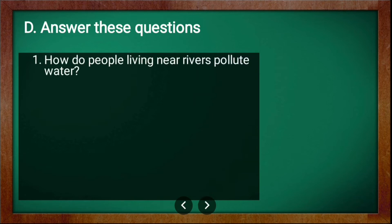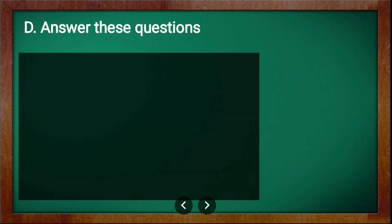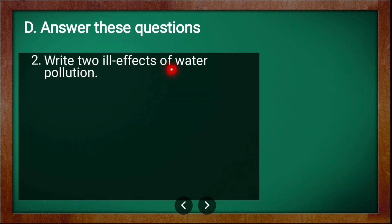Now the long answer questions. First: how do people living near rivers pollute water? Those who live near rivers and lakes throw all kinds of waste into water. Many people wash clothes and utensils in river water and pollute it. Drains from towns and cities carry dirty water mixed with soap, detergent, and chemicals and release all this into rivers, lakes, or seas. Some fertilizers and chemicals from agricultural fields also pollute the water.